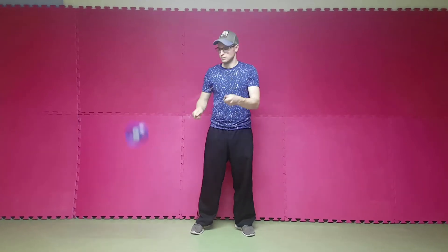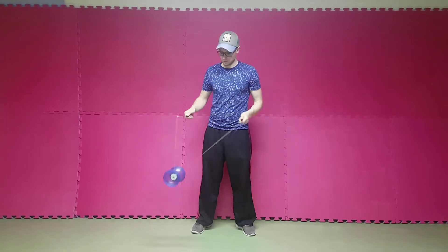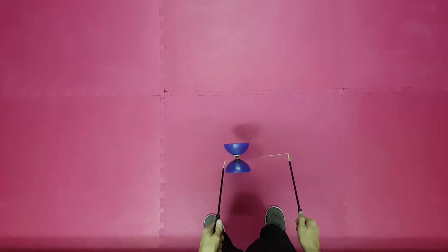Hi guys, today we will do the clockwise and counterclockwise sun. The sun is a cool-looking basic move which allows you, for example, to combine more difficult tricks or combinations.